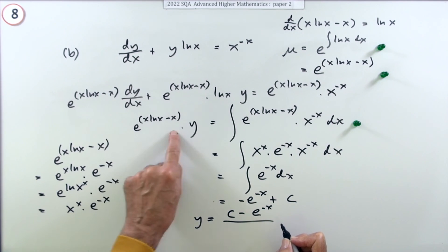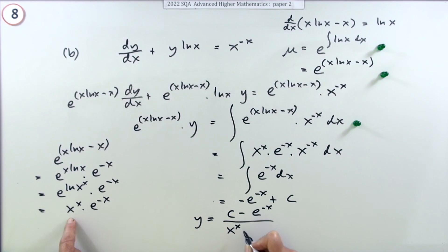But might as well write that because that looks neater. Like this, write that in this form: x^x times e^(-x), for the last mark.